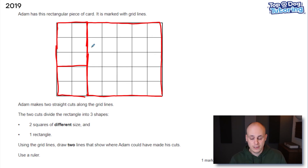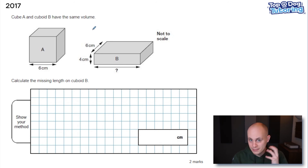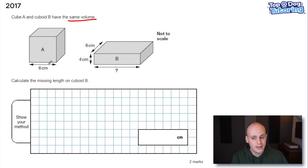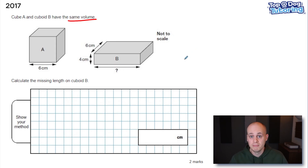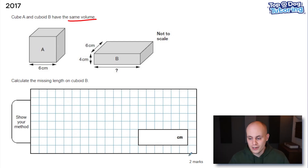On to my number one favourite question. This came up years ago in 2017 in the SATs reasoning paper — it was one of the last questions, so children were already a bit exhausted. They were given Cube A and Cuboid B, which have the same volume — crucial to the question. Some dimensions are given and you're asked to calculate the missing length on B. Have a go, and I reckon I can show you a way of solving this that you did not think of.